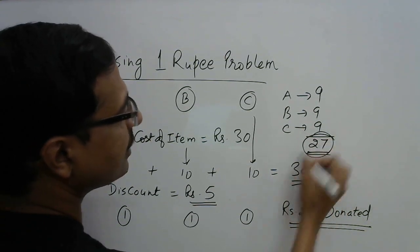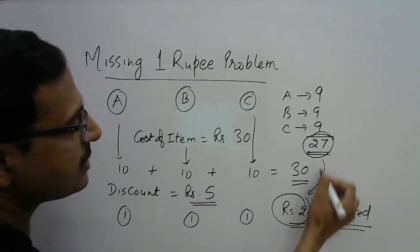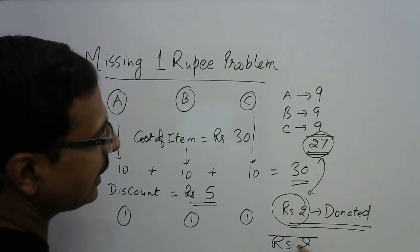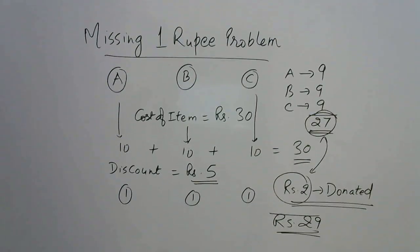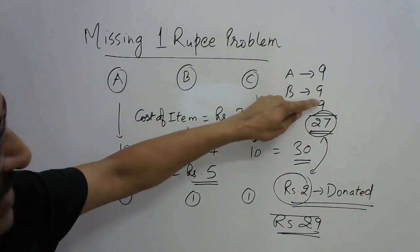So if you total this comes out to be 27, and rupees 2 were donated. So if you add these 2, this amounts to rupees 29 only. So what happened to the other 1 rupee?